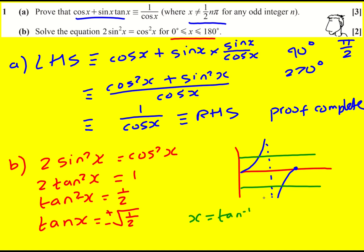So x is going to be inverse tan square root of 1 over 2, or inverse tan of minus square root of 1 over 2.